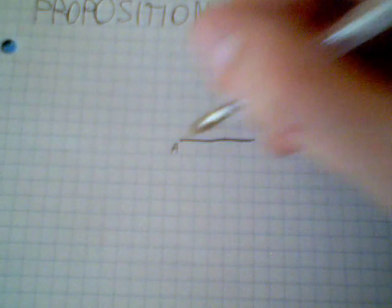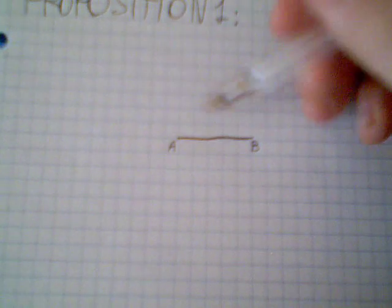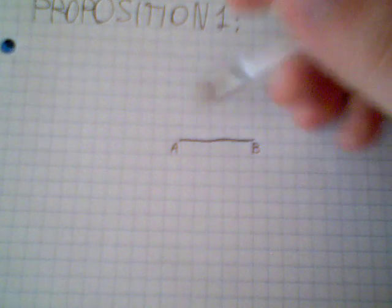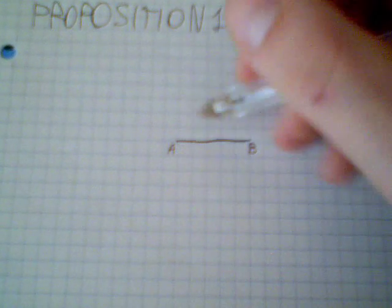So let's start. Proposition 1 says that if I have a line AB, I can build an equilateral triangle upon this line and this is how it's done.